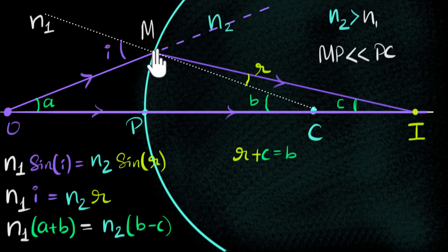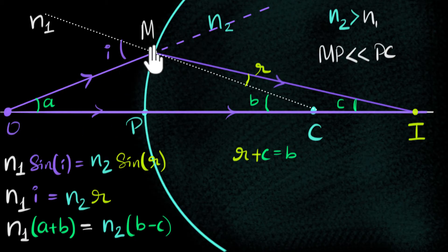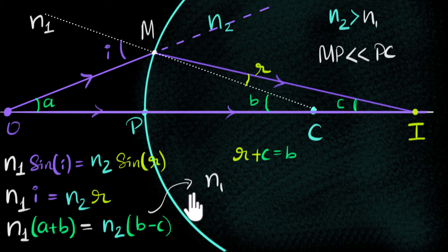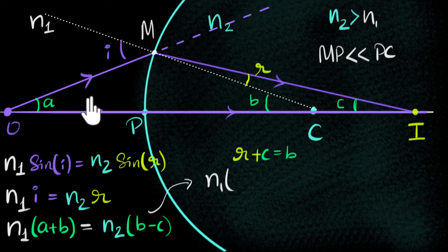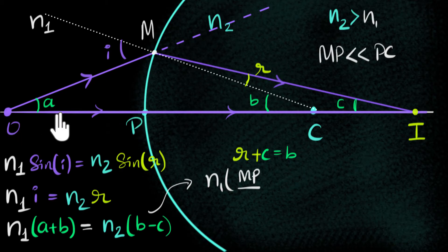Since MP is a very tiny patch on the sphere, we can assume it to be flat — just like a tiny patch on Earth. Using small angle approximation on this right-angle triangle: a ≈ tan(a) = opposite/adjacent = MP / OP, where OP is the object distance.